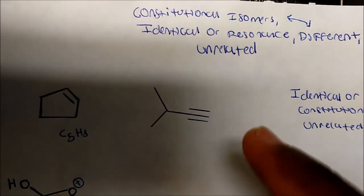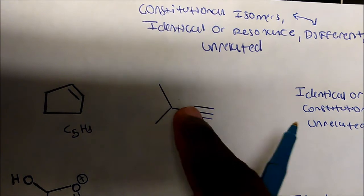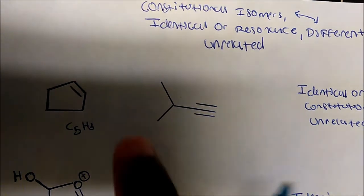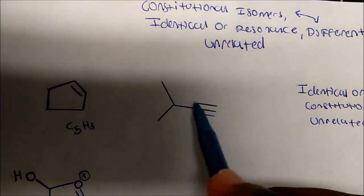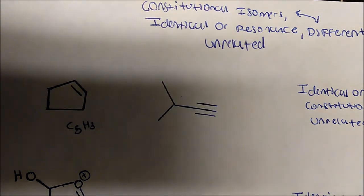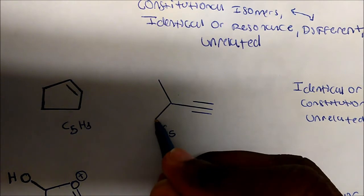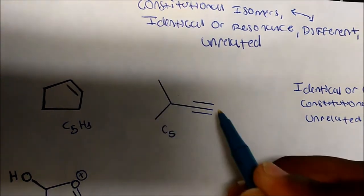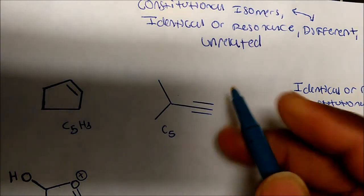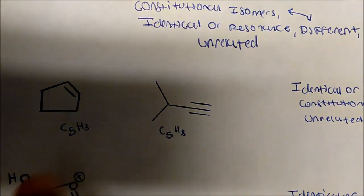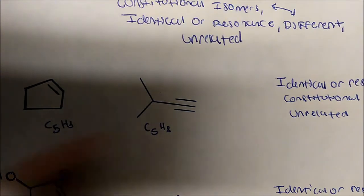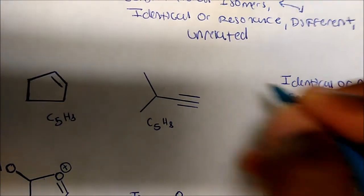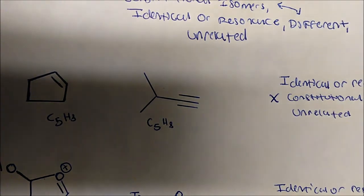Now what about this one? We have one, two, three, four, five carbons — because remember, at each end of an alkyne bond we have a carbon. And then three hydrogens, three hydrogens — that's six — one here makes seven, and a hydrogen here makes eight. So these are also C5H8. The molecular formulas are the same but they're just different structures, and that is what we consider constitutional isomers.